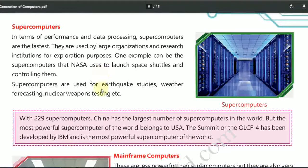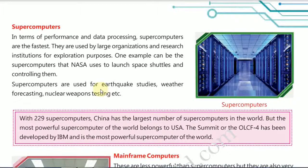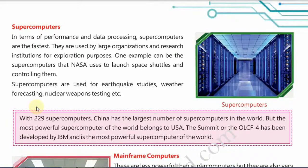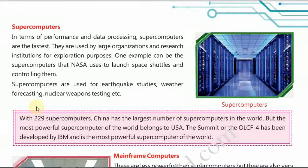Inside, supercomputers are larger and occupy more space. They require cooling stations to reduce their temperature. The strength of any nation is dependent on the size and number of supercomputers it has. Currently China has 229 supercomputers, placing it in a leading position on the basis of supercomputer count.